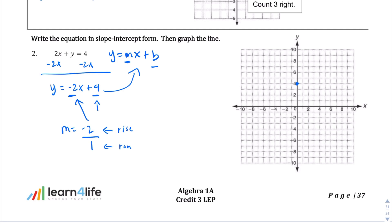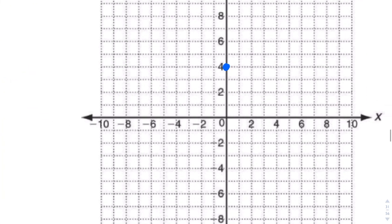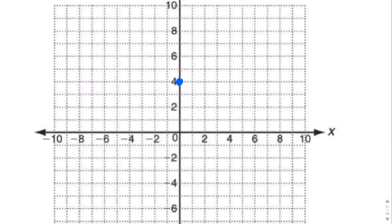Let's take a look. We're going to go down 2 and 1 to the right. From our graph here, we're going to go down 1, 2 points, and 1 to the right. There's the next point. Down 2, 1 to the right. Down 2, 1 to the right. I don't feel like I need to make any more points than that.